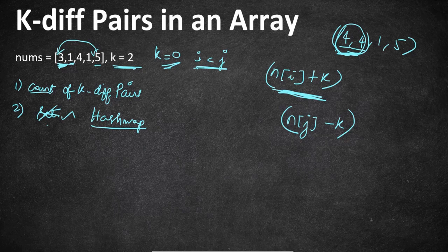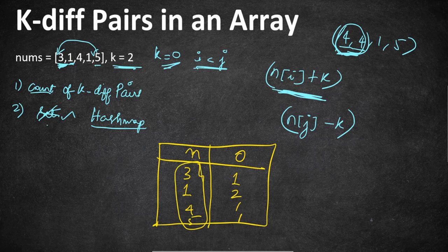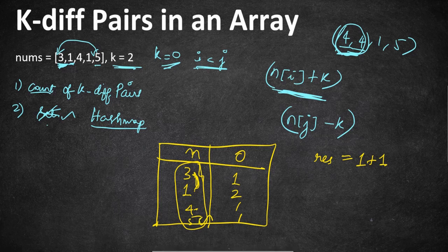Let's do a quick iteration. The hashmap stores: 3 → 1, 1 → 2, 4 → 1, 5 → 1. We iterate the keys and check if key + k exists. Three plus 2 is 5 — exists, result becomes 1. One plus 2 is 3 — exists, result becomes 2. Four plus 2 is 6 — doesn't exist. Five plus 2 is 7 — doesn't exist. We return result = 2. This logic applies when k is greater than 0.